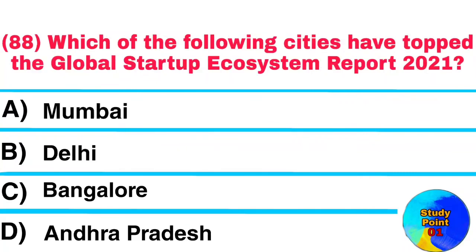Question No. 88. Which of the following cities has topped the Global Startup Ecosystem Report 2021? Answer: Bangalore.